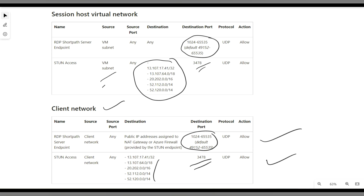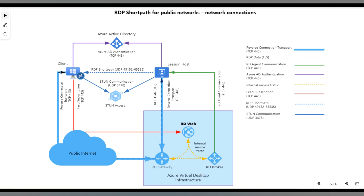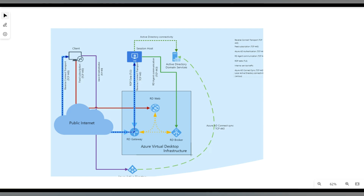Now let's look at the architecture and communication flow for RDP Short Path over public network. Before that, let's understand how Azure Virtual Desktop uses reverse connect by default. With reverse connect, which is TCP-based, when you launch any desktop through Azure Virtual Desktop, the connection from the client goes to the AVD gateway.